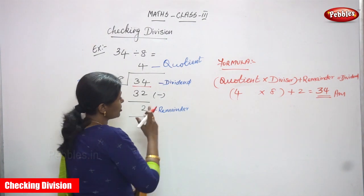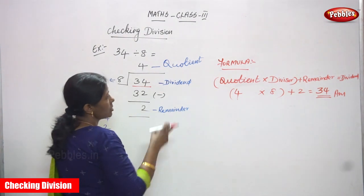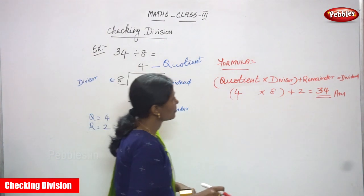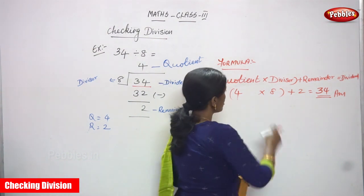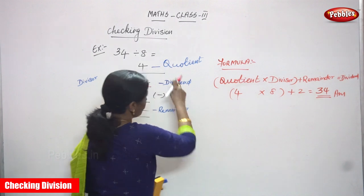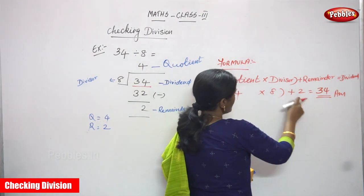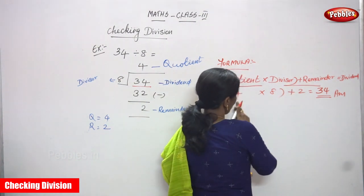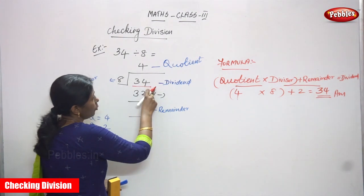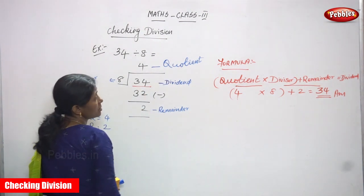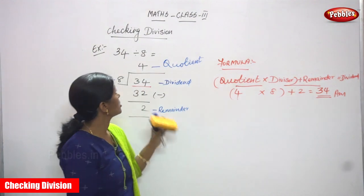Your quotient and remainder are perfectly right — there is no mistake. So you must know the formula. That is very important. The formula is: quotient into divisor plus remainder equals dividend. You found the quotient is 4 and the divisor is 8, so 4 into 8 is 32, plus 2 is 34. You get the dividend 34 — the quotient and remainder are exactly right, without any mistakes. So I think you understand checking division.